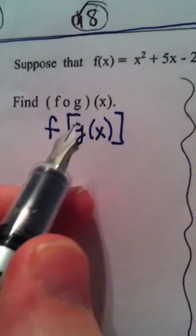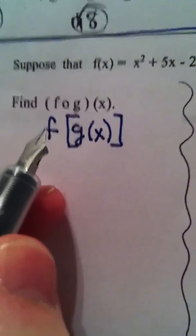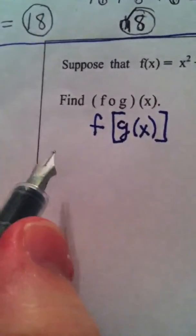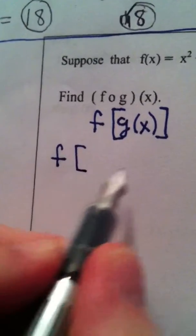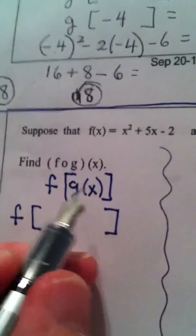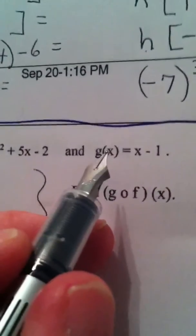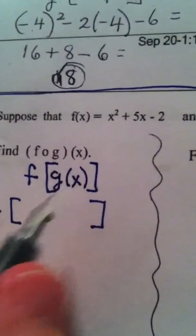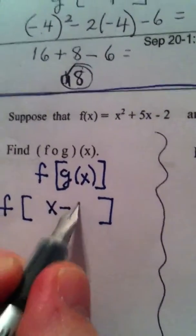In other words, find g of x, and then we use f. Okay, right now f doesn't matter. We write it down, but we're not using it. g of x is x minus 1. So, g of x becomes x minus 1.